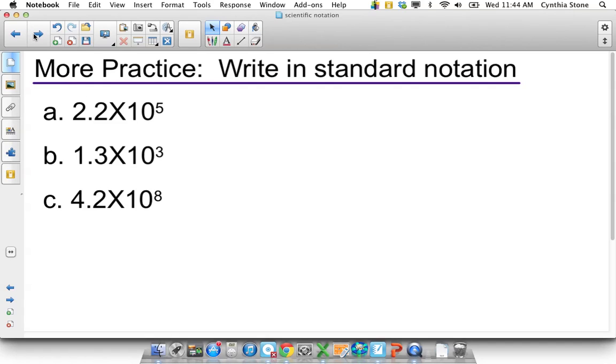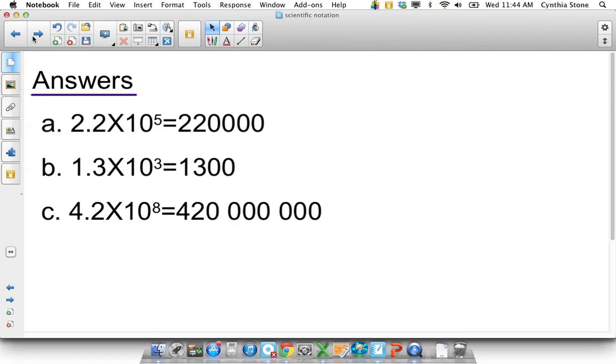Going in the opposite direction. So write these as regular numbers. So write this out. Pause the tape. Try the questions, and then check the answers. Here's the answers. Times 10 to the 5, that means I have to have 6 numbers written out, which I do. Times 10 to the 3, I have to have 4 numbers written out. Times 10 to the 8, I have to have 9 numbers written out. Okay?